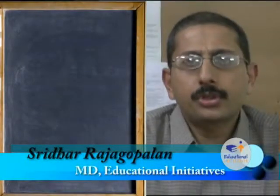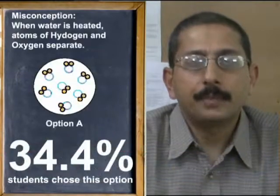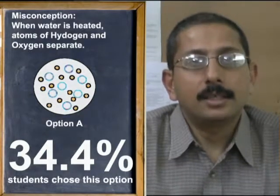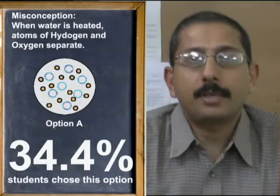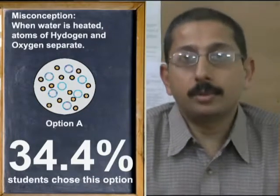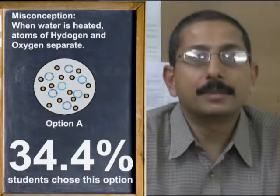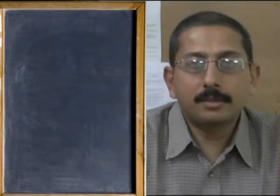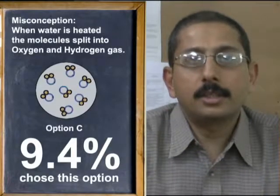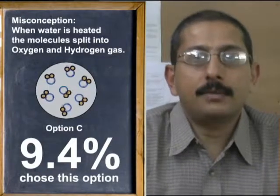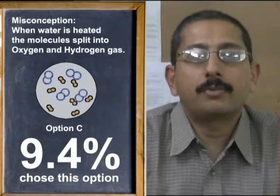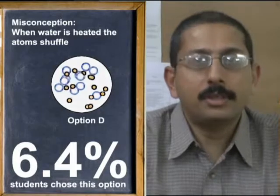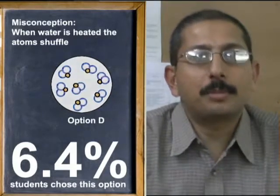The most common misconception heard again and again seems to be that when water is heated, the water molecule will split and the constituent hydrogen and oxygen atoms would separate. Some children seem to know that hydrogen and oxygen atoms cannot exist independently, so combining this misconception with that correct piece of information, these children conclude that the correct answer is C — because after they separate, they must come together in pairs to form H2 and O2. We even heard students say that the atoms shuffle around and form a new arrangement, which was option D.